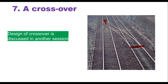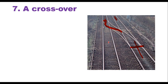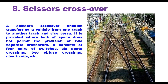A crossover provides the facility of transferring a railway vehicle from one track to the other, but it does not provide the facility to transfer a vehicle in the opposite diagonal direction. For that, there is a scissor crossover, which combines two crossovers — giving four pairs of points and a diamond crossing. A scissor crossover enables transferring a vehicle from one track to another and vice versa. It is provided where lack of space does not permit two separate crossovers, though it is more expensive in initial cost and maintenance, so it is generally used only in yards with space constraints.